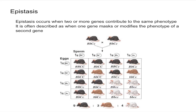Let's say you have these mice right here. They have two different genes that contribute to their coat color — genes B and C. They're both heterozygous for genes B and C that contribute to their coat color, and as you can see these mice are gray.